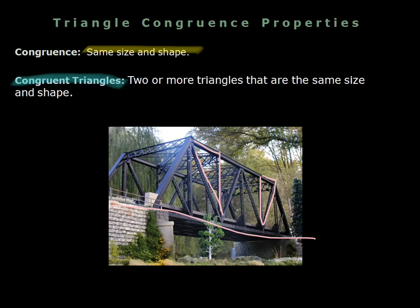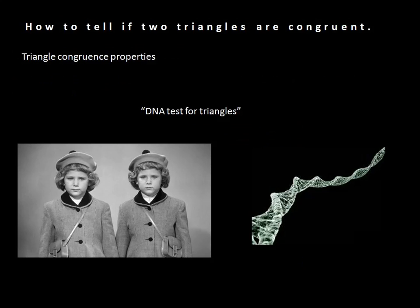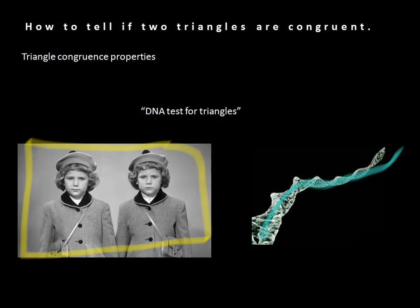These properties are all about how to tell if two triangles are congruent. The triangle congruence properties are kind of like a DNA test for triangles. We have two identical twins here — they look identical, but if we really wanted to be sure we could do a DNA test, because identical twins would have the same DNA. It's the same idea with congruent triangles.